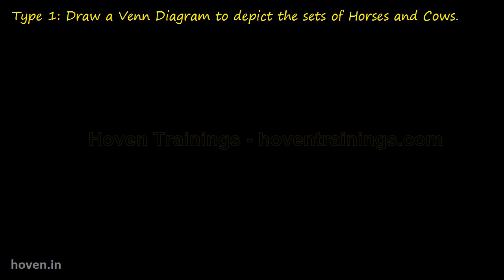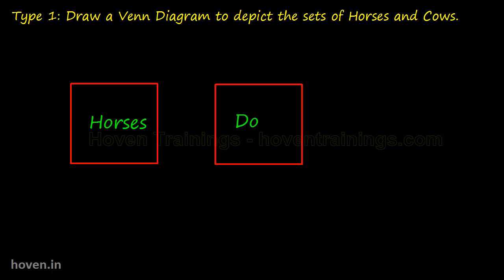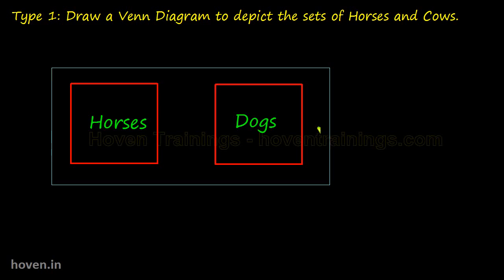Let us take this question where we have to depict two sets with the help of a Venn diagram: draw a Venn diagram to depict the sets of horses and cows. We can put all the horses into this rectangle — this is the set of horses. Similarly, we can draw another rectangle for the set of dogs. And this is the completed Venn diagram.